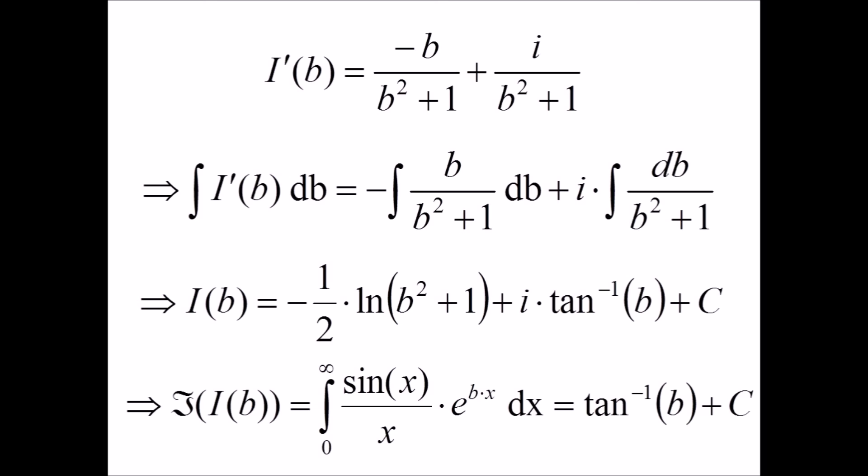Taking the imaginary part of this, we get sine of x over x times e to the b times x. And this equals the arctangent of b plus c.